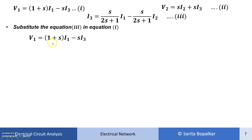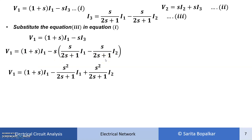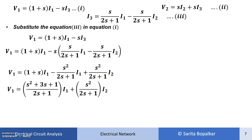We substitute I3 into equation 1 and combine the I1 terms. This brings in terms like S²/(2S + 1)·I1 and S²/(2S + 1)·I2, and after combining the I1 terms, we obtain V1 expressed entirely in terms of I1 and I2.